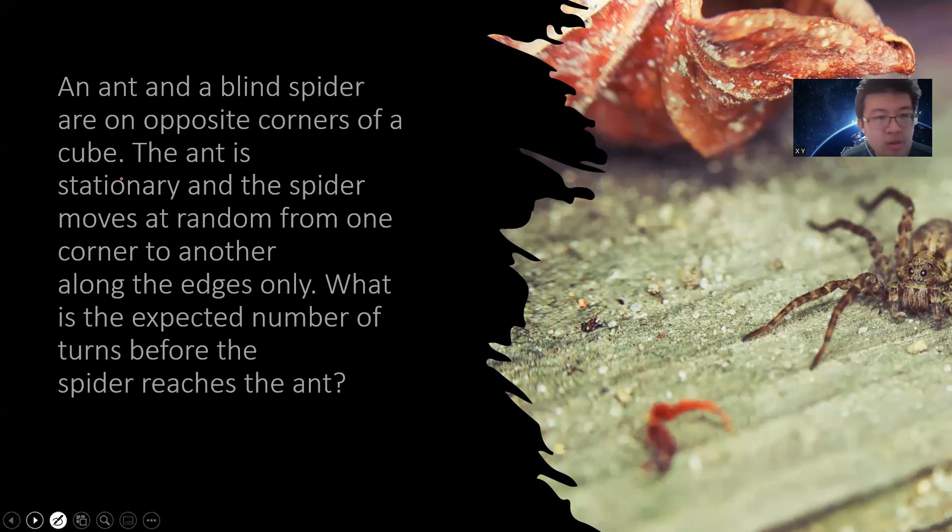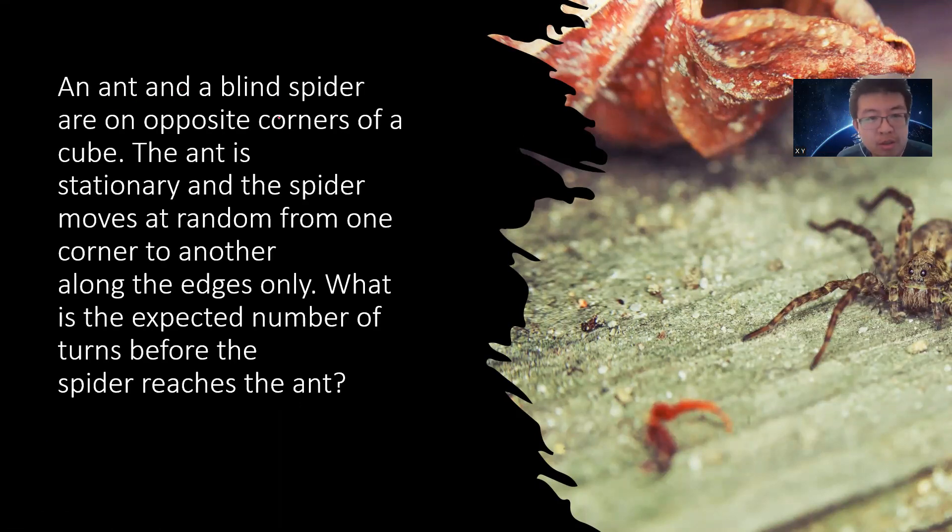Hey, what's up guys. So today I solve this interesting question that I just recently found, it's very interesting. The problem is that there's ants and there's a blind spider, they're opposite corners of a cube, and then the ant is stationary and the spider moves randomly from one corner to another along edges only. What's the expected number of turns before the spider reaches the ant? Okay, so you guys can take your time. Let me just provide a solution.